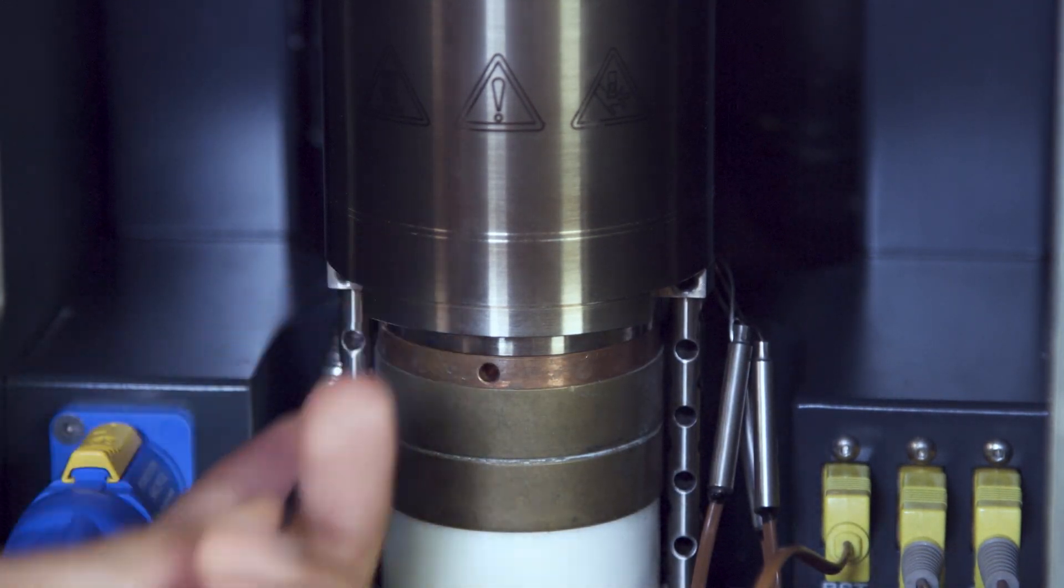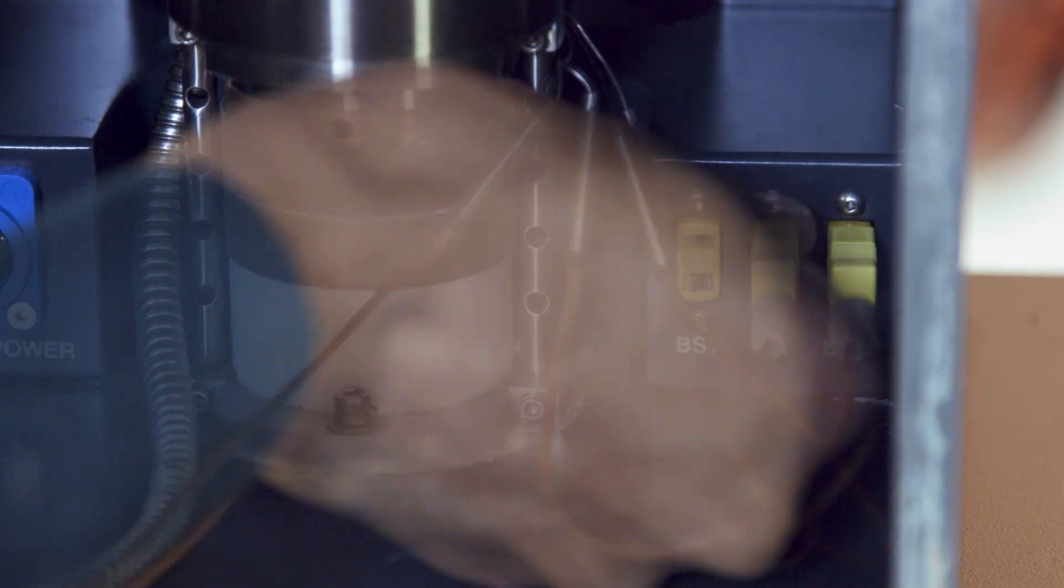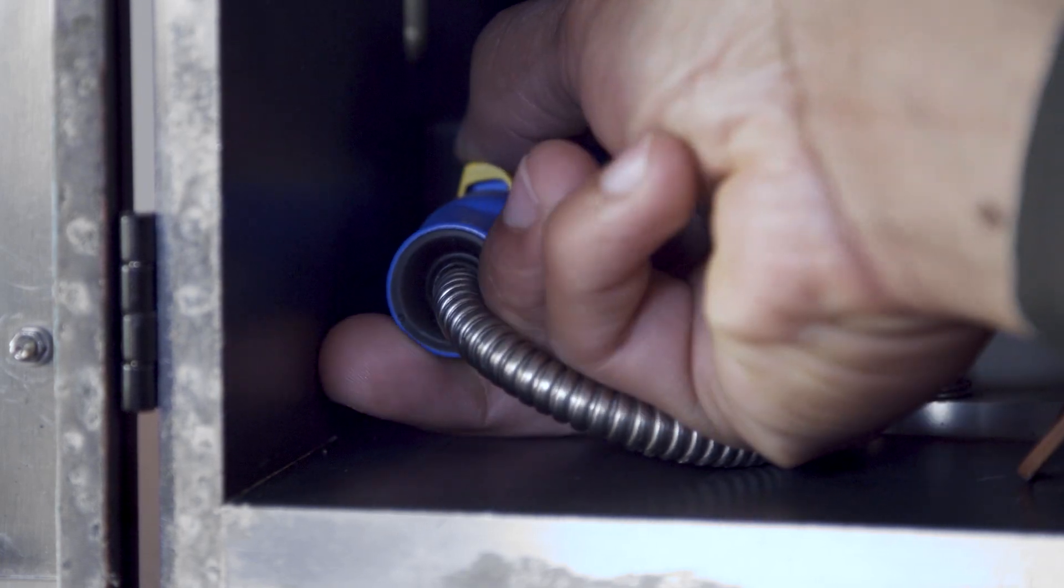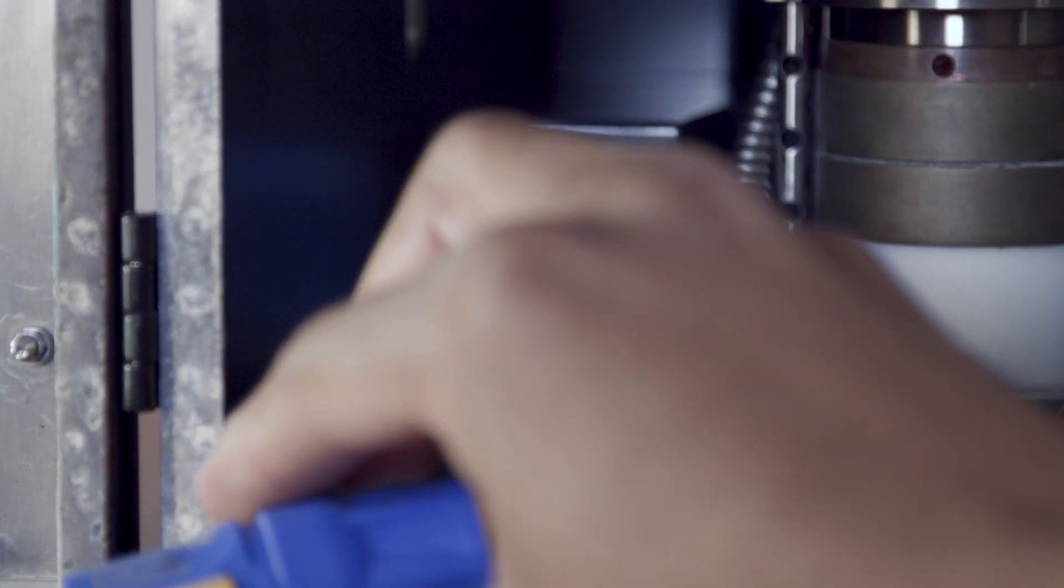Next, unhook the three yellow thermocouple connectors to the right of the stack and unplug the blue heater power cord on the left side of the stack.